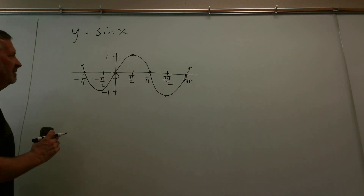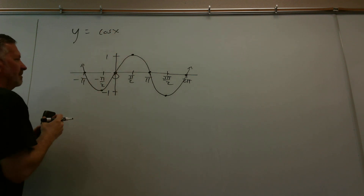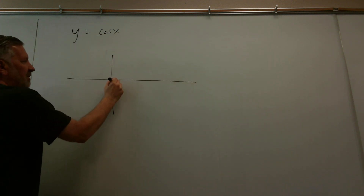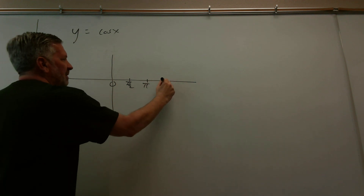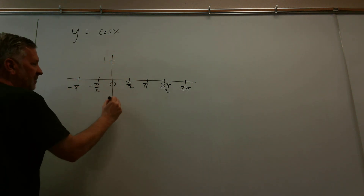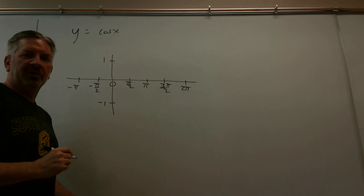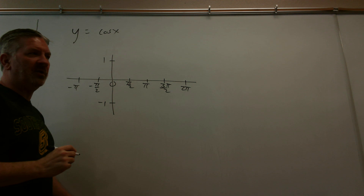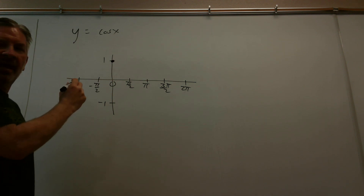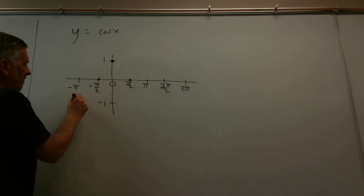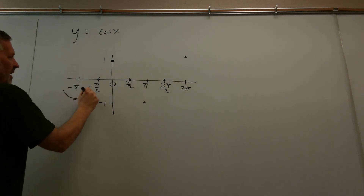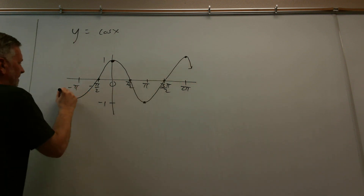Now we also did the same thing with cosine. Let me sketch the exact same setup we had before — something important happens every pi over two. Just like the cosine graph, the sine graph had a range of minus one to one as well. The cosine graph crosses the y-axis at the point (0, 1) — cosine of zero is one. That's a high, so the next important places are middles, and the next ones are lows. The graph is a nice smooth curve like that.